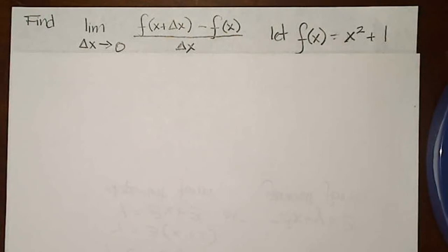This is a very typical differences limit problem, and the whole goal is to use your algebra skills to make the correct substitutions, be able to factor out a delta x in the numerator—that's always your goal—so that you can cancel the delta x in the denominator.